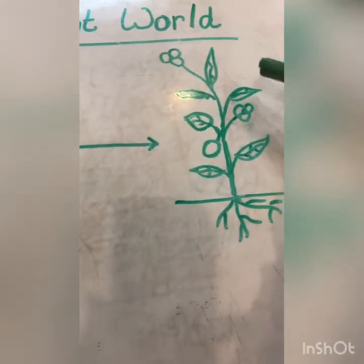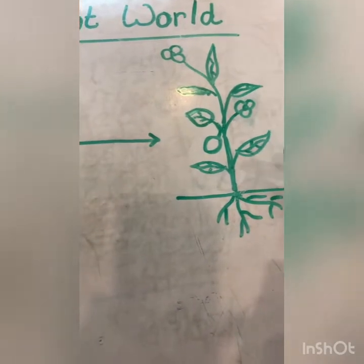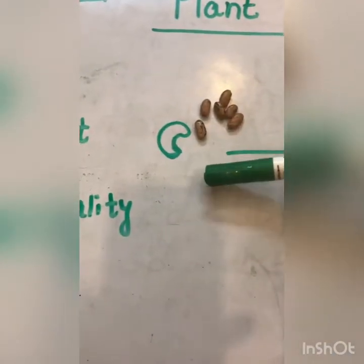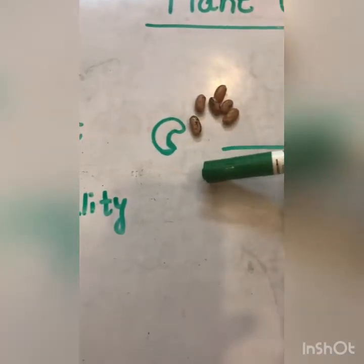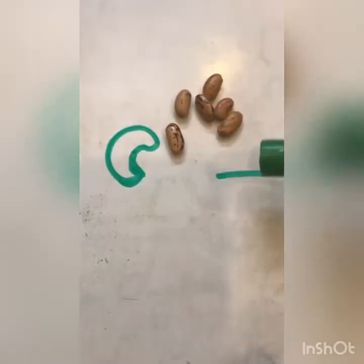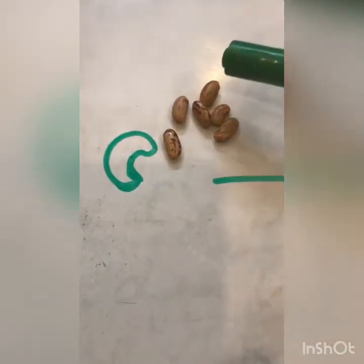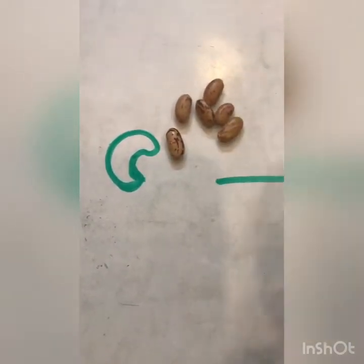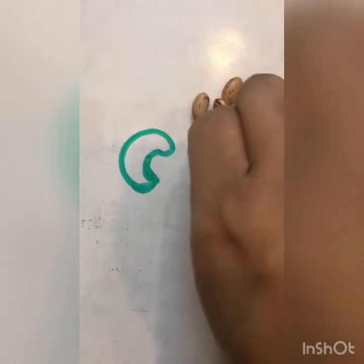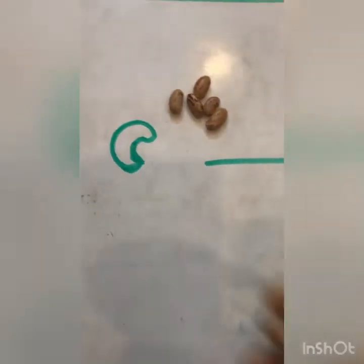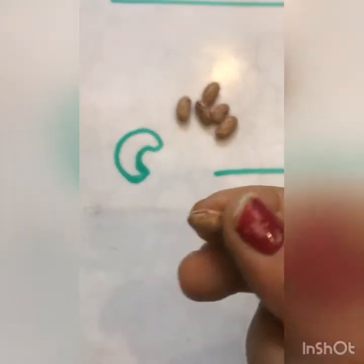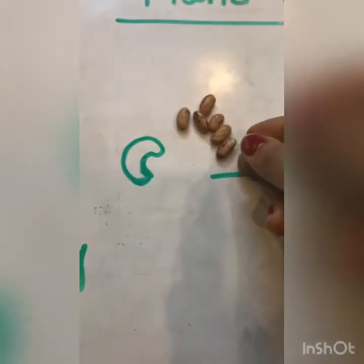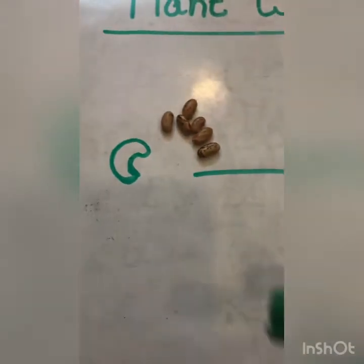So kids, to get a new plant, a seed is sown into the soil. See these tiny seeds. Do you know the outer covering of the seed is known as seed coat? After this class, observe the seed. This outer covering is known as a seed coat.